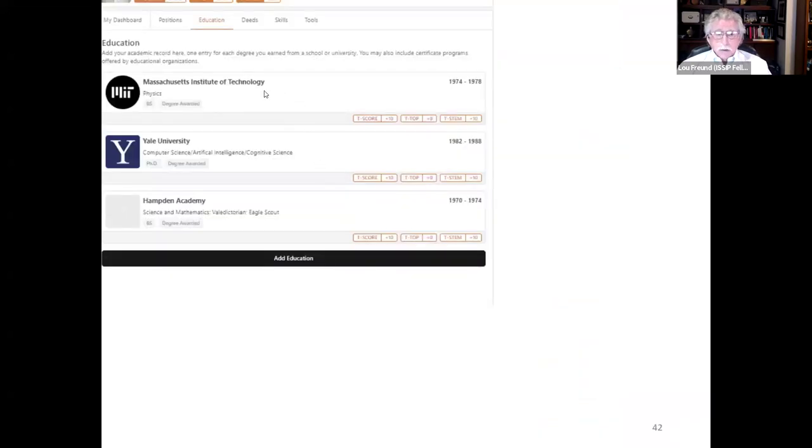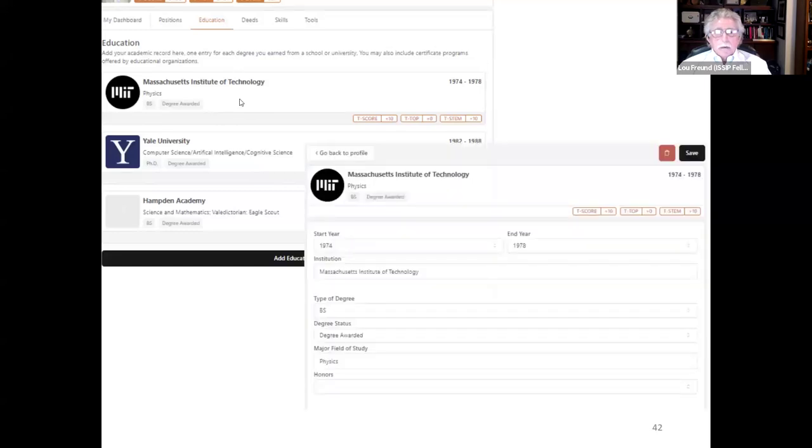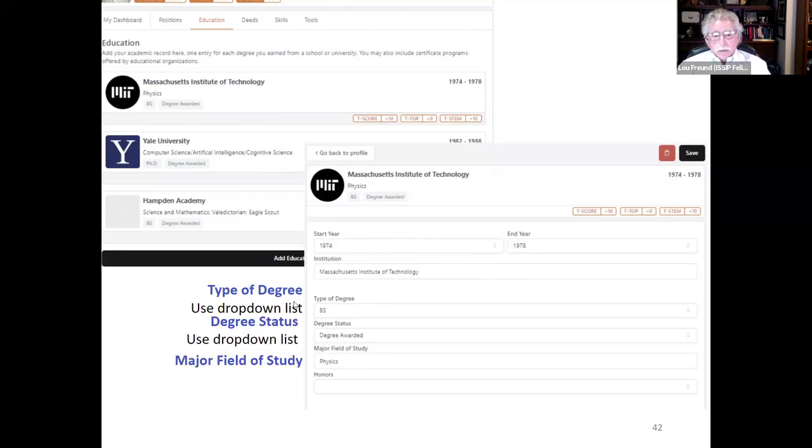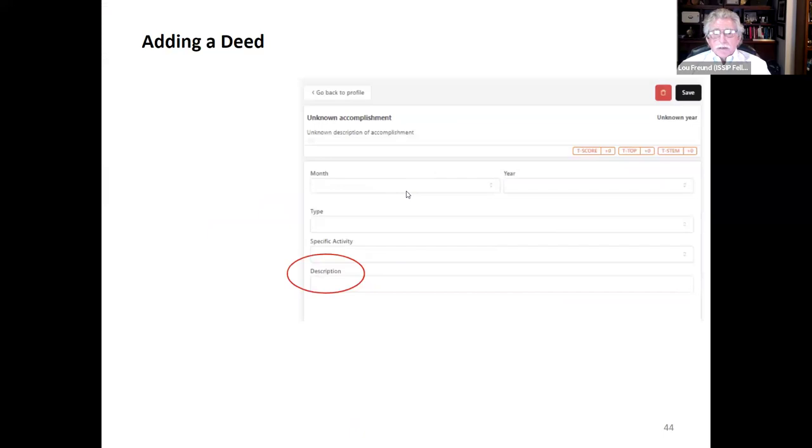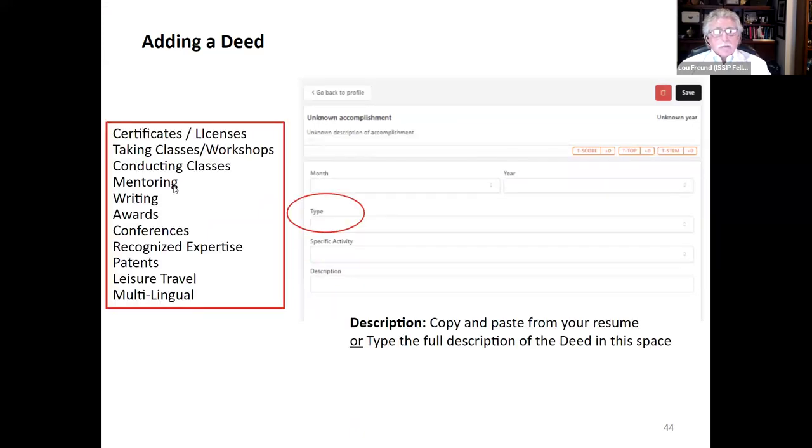We're looking for these attributes of your work and experience as we go about completing estimates of your T-top score. In addition, on the responsibility side is where you'll indicate the operations responsibilities, critical thinking, and systems and operations innovation score. These are all sliders and are easily moved. They all come up no when you start a position or when you start a record. So you'll have to go and adjust any of them that are not no. Under education, your institutions where you've attended are going to be listed under this tab. And if you click on one, you'll get information about that particular educational experience where you'll fill in the type of degree, the degree status, whether it's awarded or not, and the major field of study. Deeds are quite broad and allow you to represent honors, certificates, licenses, mentoring, writing, awards, conferences, patents, leisure travel, multilingual skills. A variety of different elements can be listed as a deed.